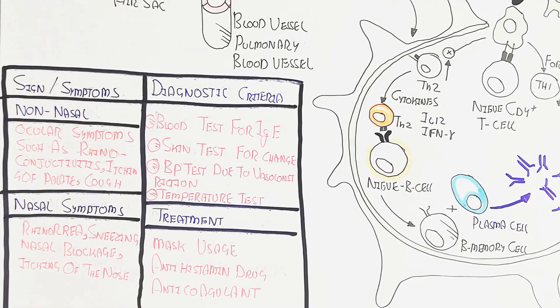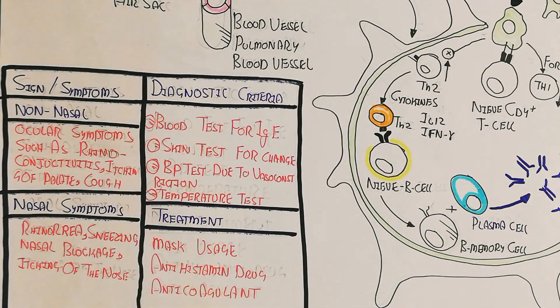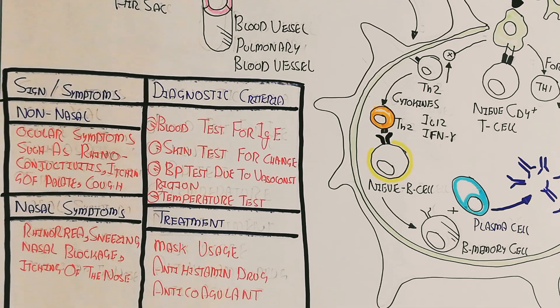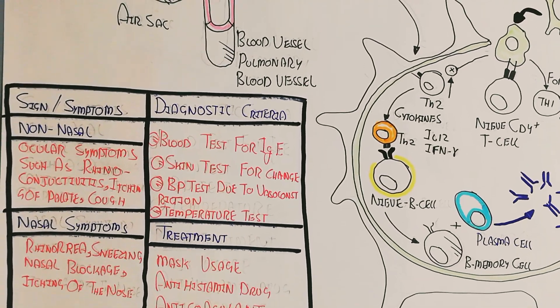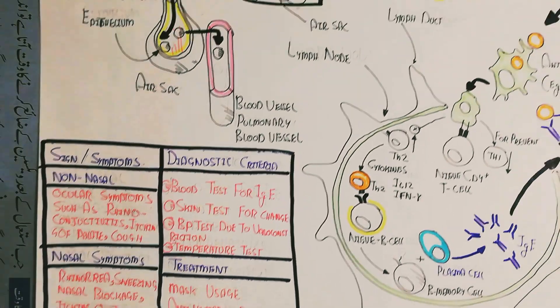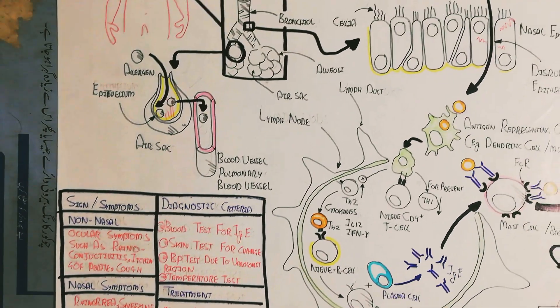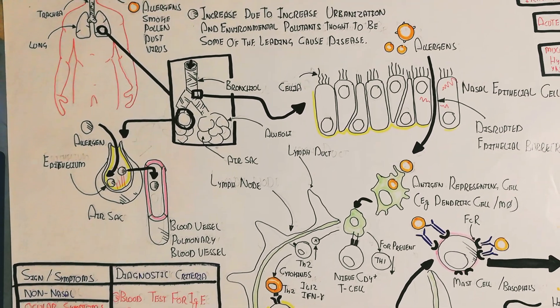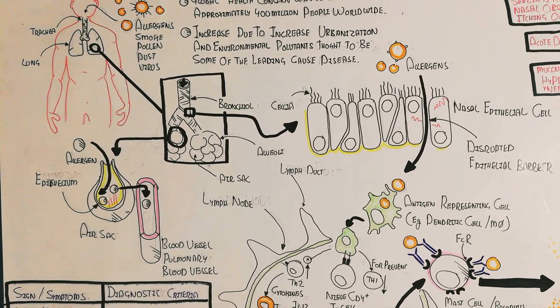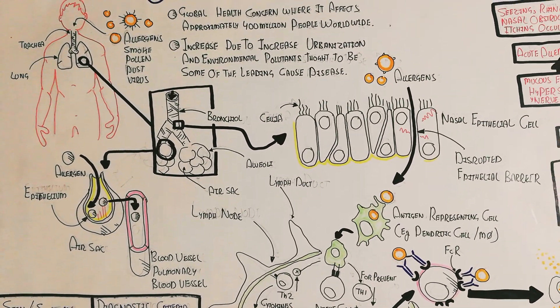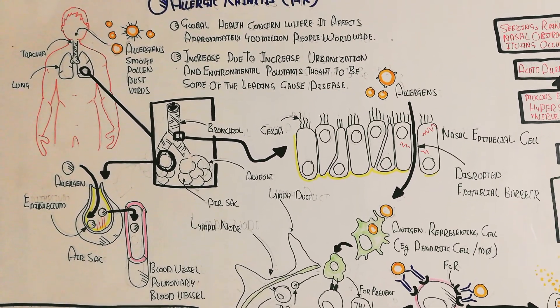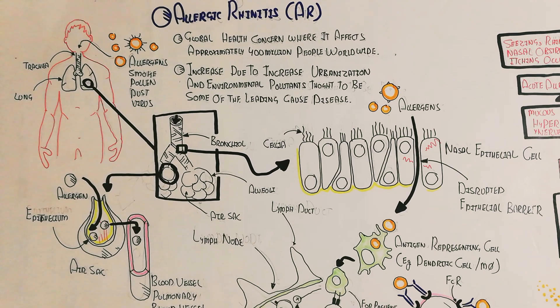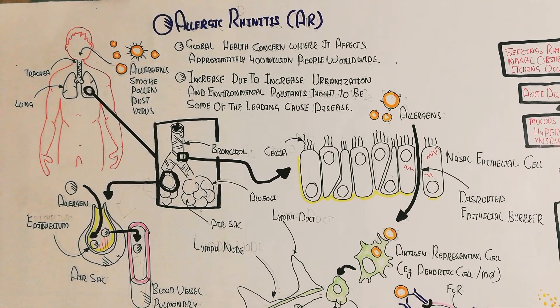Allergic rhinitis represents the progression of an allergic reaction into a severe, chronic condition, leading to persistent chronic allergic symptoms.